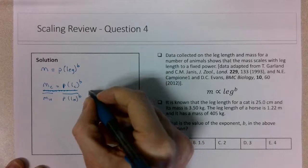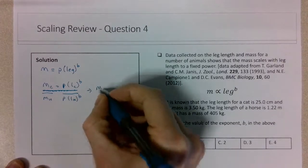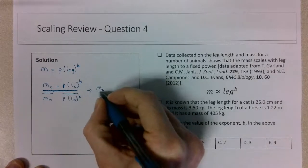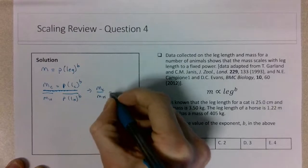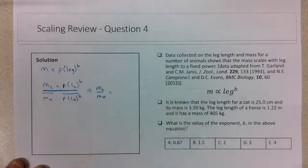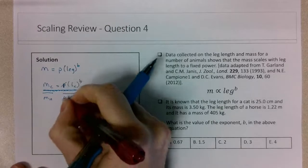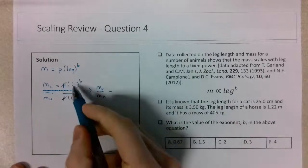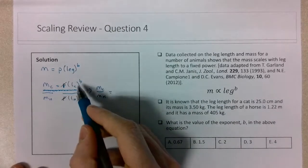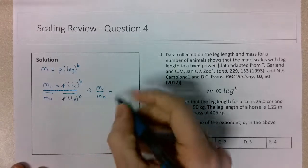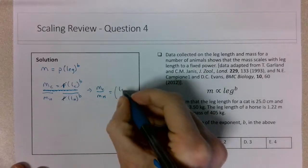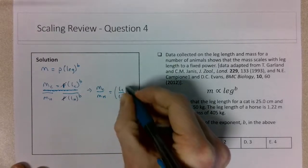We can simplify this equation. The mass of the cat over the mass of the horse - we can cancel out those p's. Then you'll be left with the leg of the cat raised to b over the leg of the horse raised to b, so we can combine this into lc over lh raised to the b.